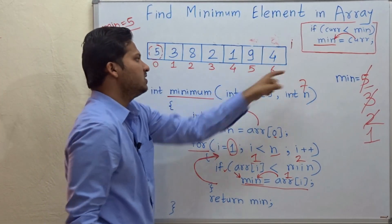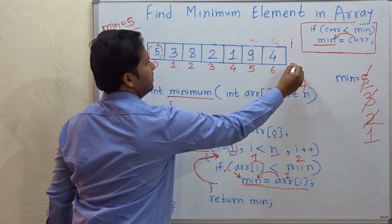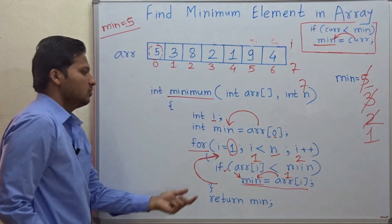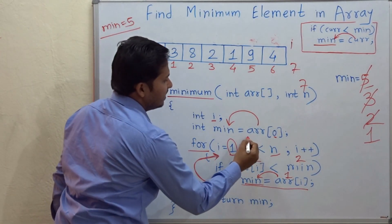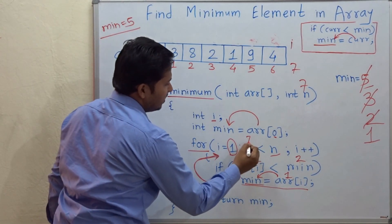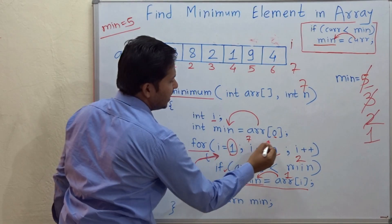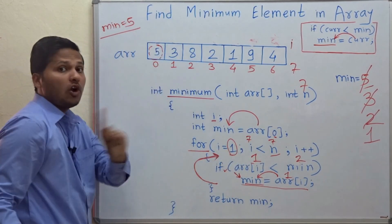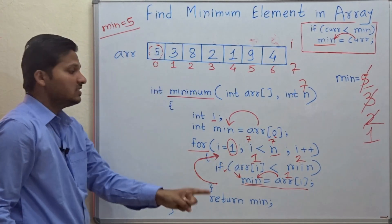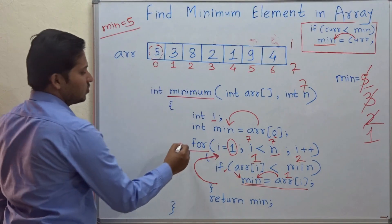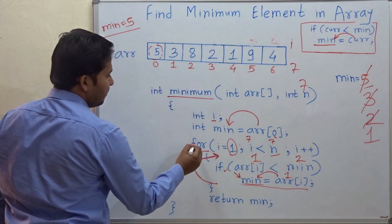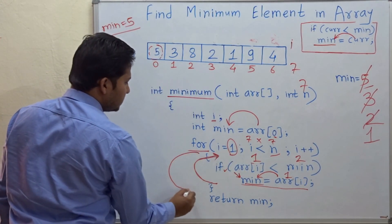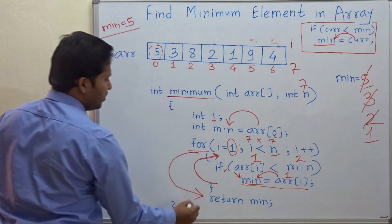Now i becomes 7. i is less than n — currently i is 7 and n is 7, and 7 is not less than 7. So this condition fails and we come out of this for loop.